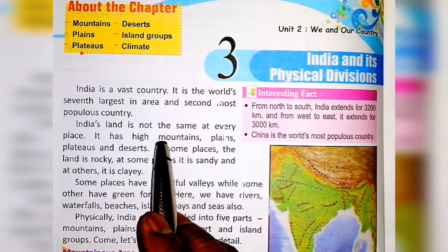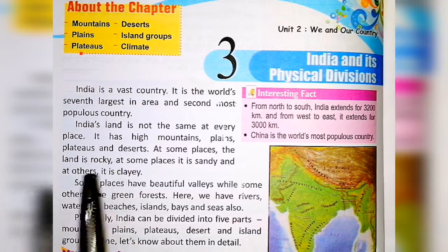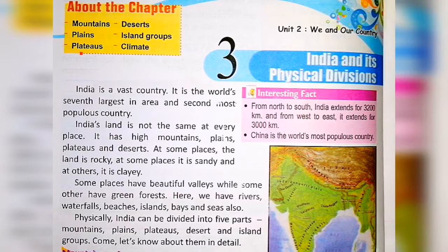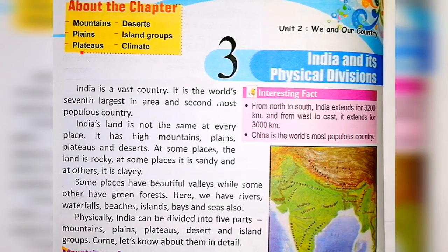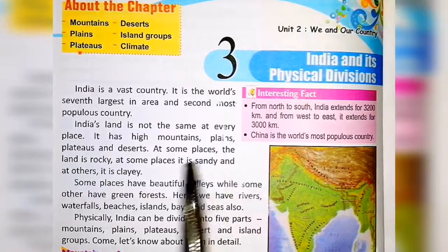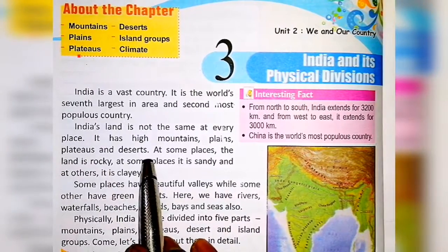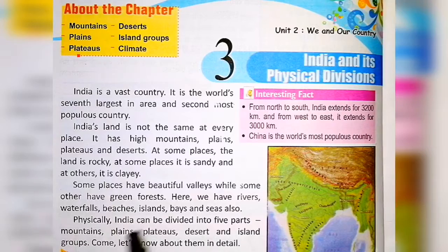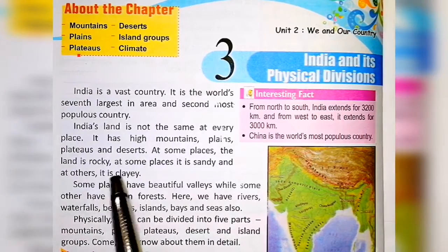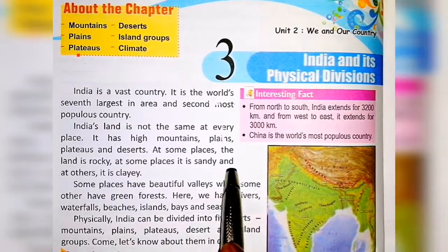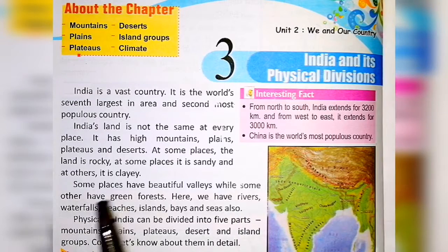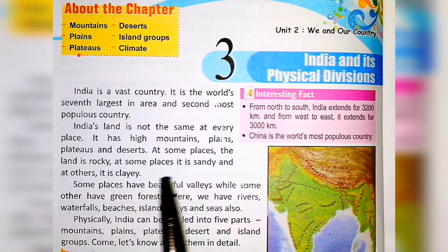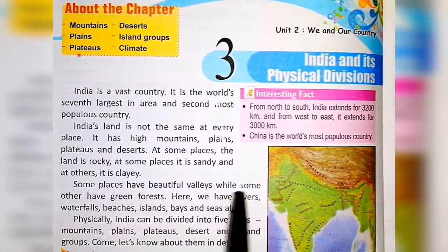India's land is not the same at every place. It has high mountains, plains, plateau, and desert areas. At some places the land is rocky, at some places it is sandy, and at other places it is clay — that is, chikni mitti.